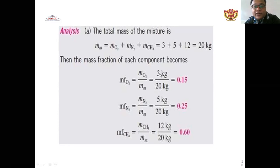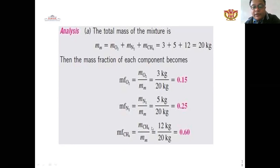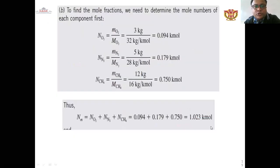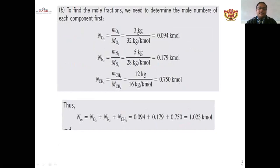The mass fraction of each component is calculated as the component mass divided by total mixture mass. For example, if oxygen is 3 kg out of a total mixture of 20 kg, then the mass fraction is 3/20 = 0.15. To find the mole fraction, we determine the mole number of each component the same way we handled mass.